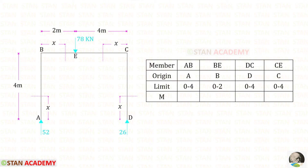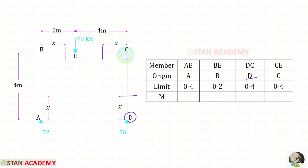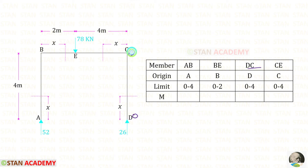Now let us make a table. In the table, first let us enter the members: AB, BE, DC, and CE. For the section in AB the origin is A; for BE the origin is B; for DC the origin is D; and for CE the origin is C. The limit for AB is 0 to 4, for BE is 0 to 2, for DC is 0 to 4, and for CE is 0 to 4.